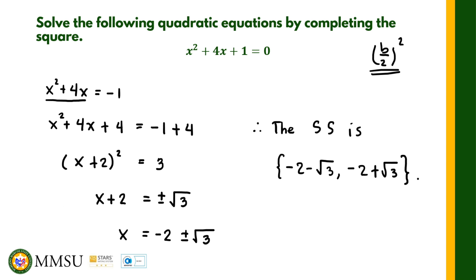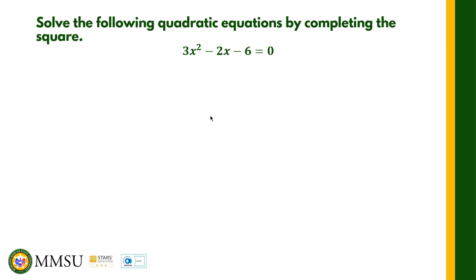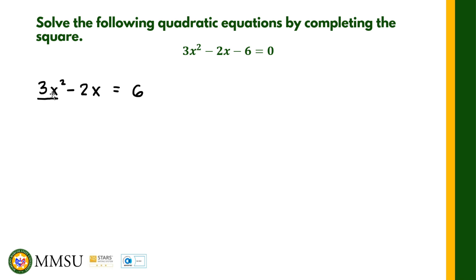Now we use completing the square to solve another example: 3x² − 2x − 6 = 0. Just like before, we transpose −6 to the right side, giving 3x² − 2x = 6. However, based on the definition of completing the square, we can only complete the square when the coefficient of x² is 1. So we cannot immediately complete the square here — we need to factor out 3 first.